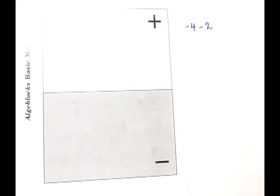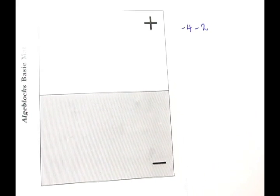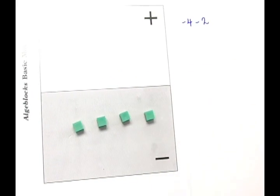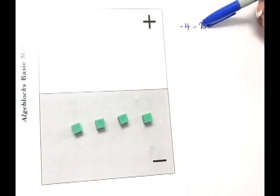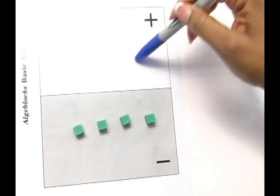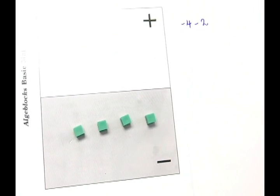We can also use the basic algae block mat to model subtraction of integers. So if we had a negative 4 and we wanted to subtract 2, students will clearly see that we don't have positive 2 to take away. So they go back to the idea of zero pairs.